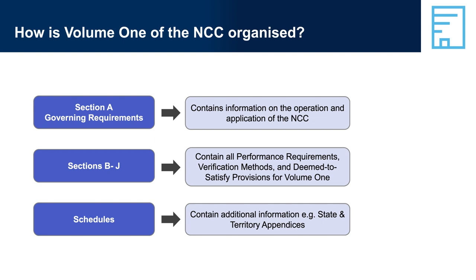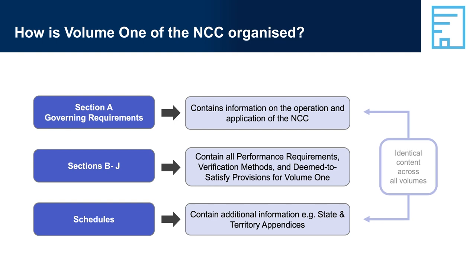The structure of Volume 1 is similar to the structure of Volume 3, with performance requirements, verification methods and DTS provisions grouped across different sections. This is different from Volume 2, where performance requirements and verification methods are all gathered together in Volume 2, with the DTS provisions located in a separate ABCB Housing Provisions Standard. Volume 1 contains the same schedules as the other volumes, though the contents of Schedules 4 to 11, State and Territory Appendices, varies. The schedules are discussed in the Understanding the NCC module, so this module focuses on understanding and using Sections B to J of Volume 1.